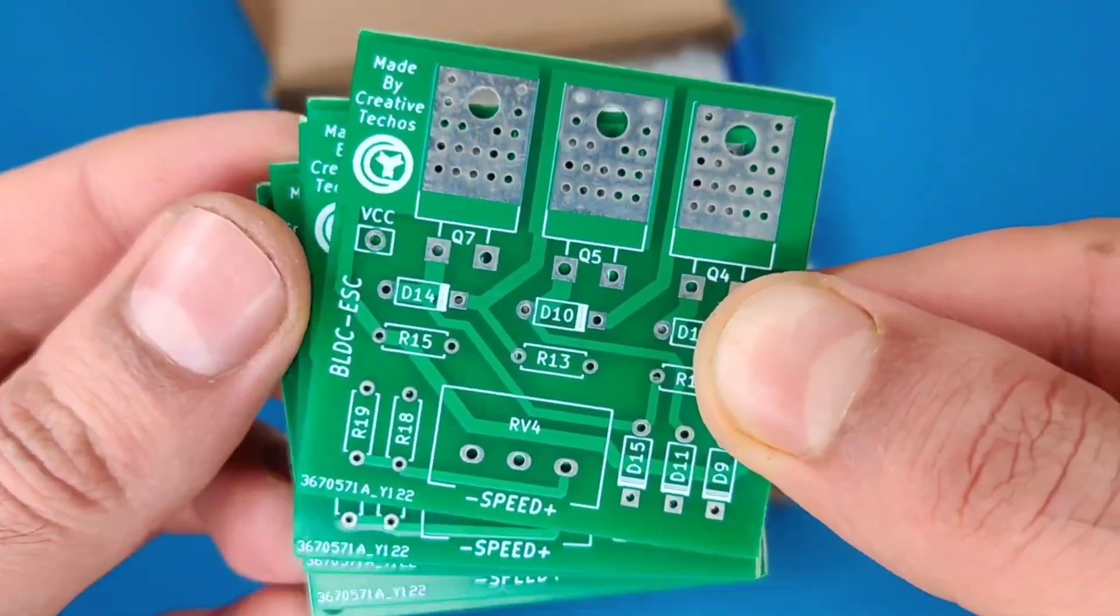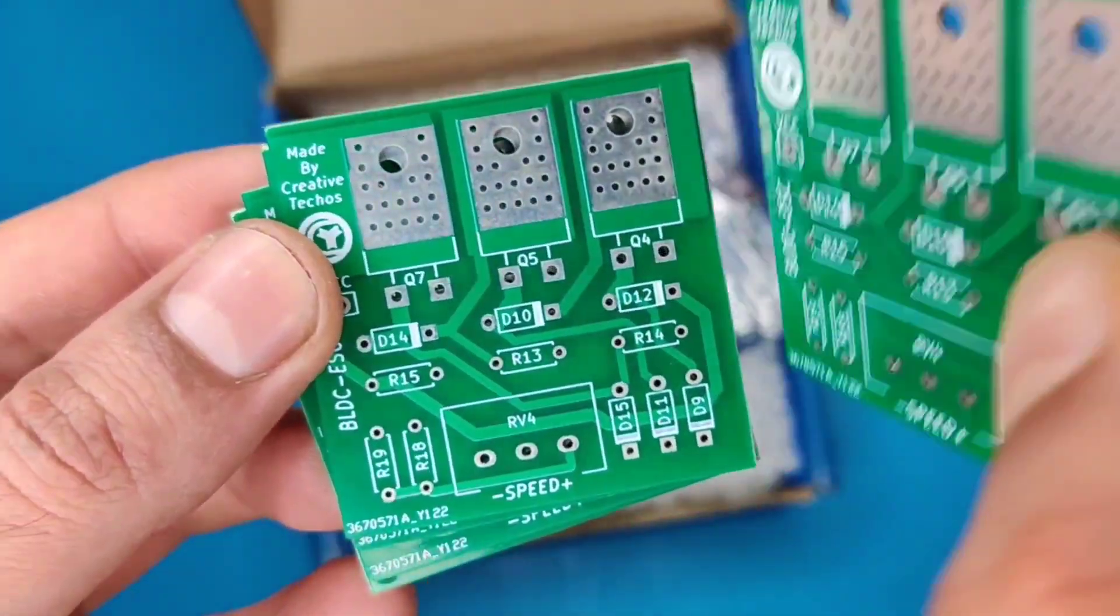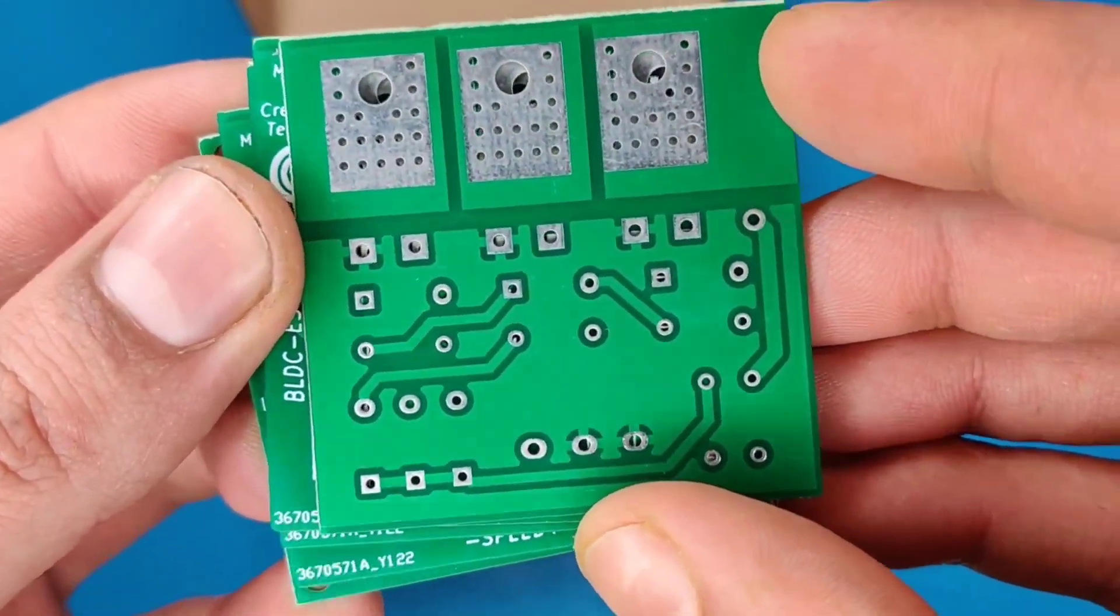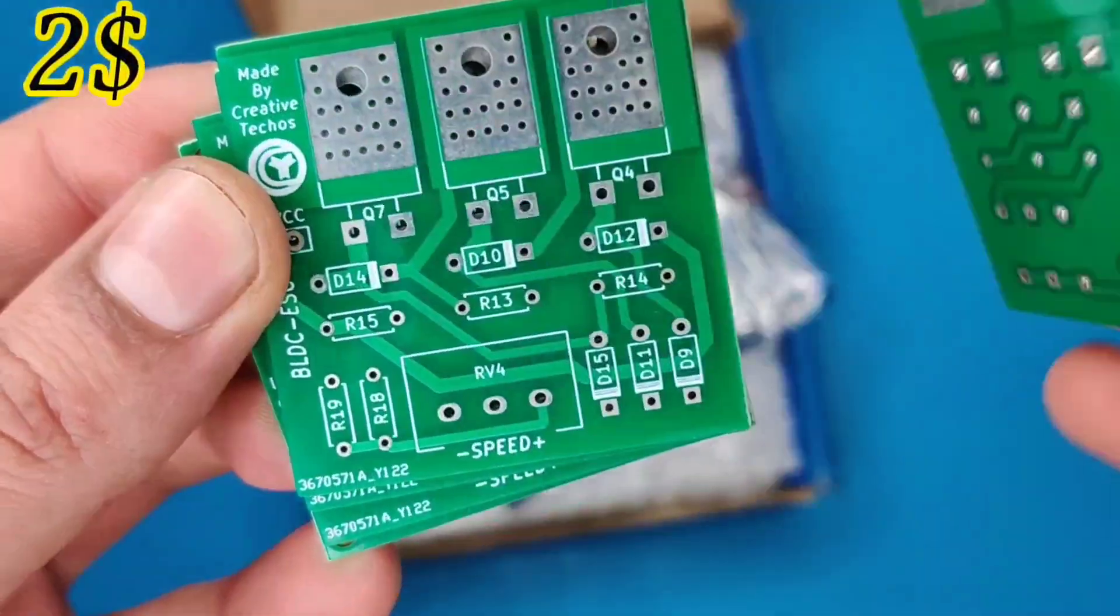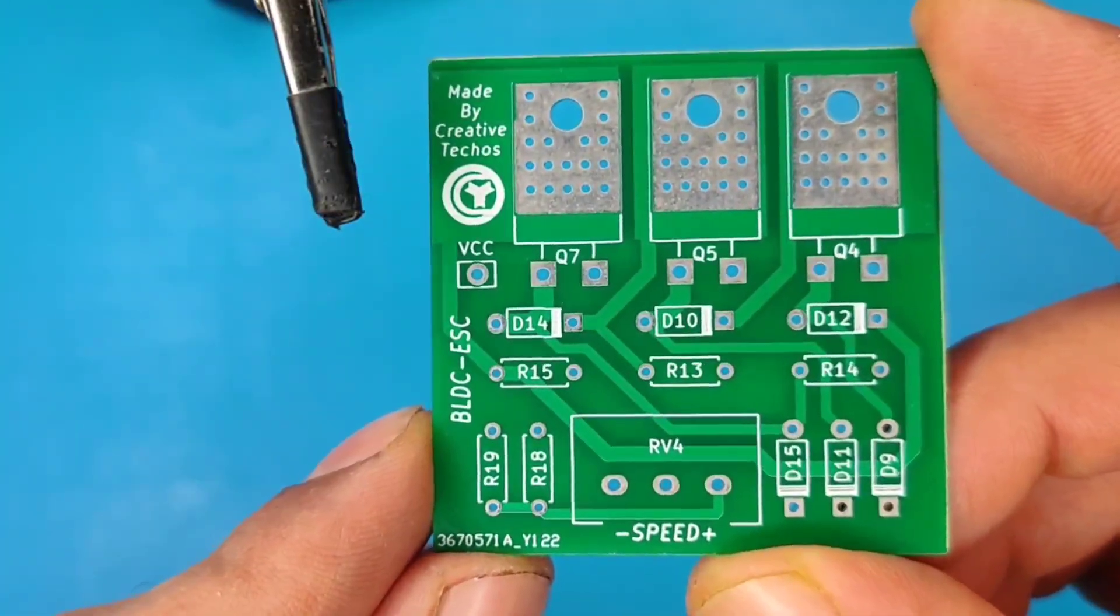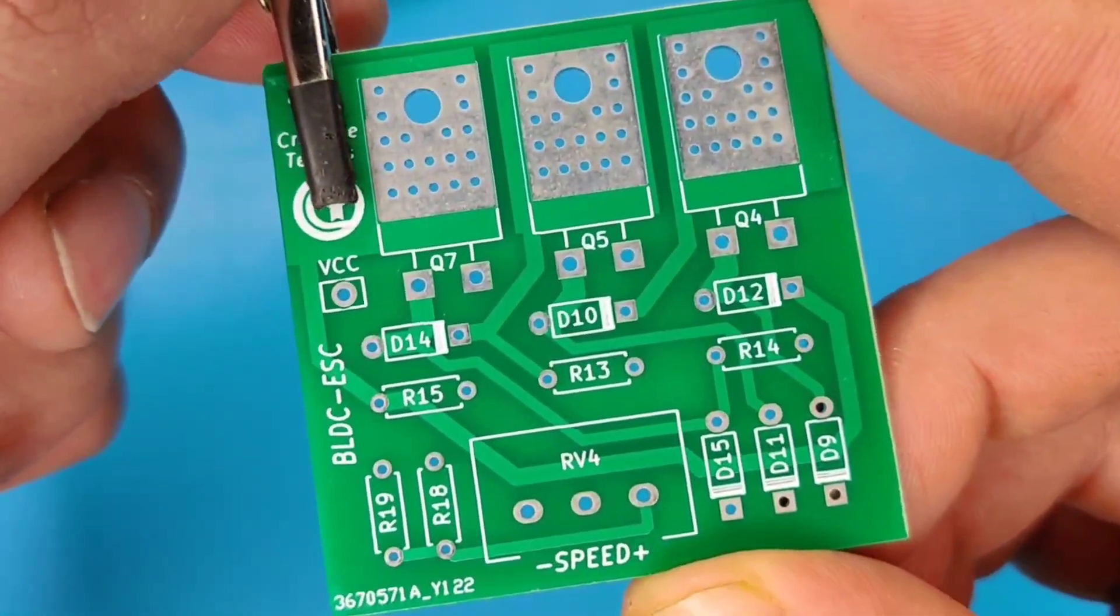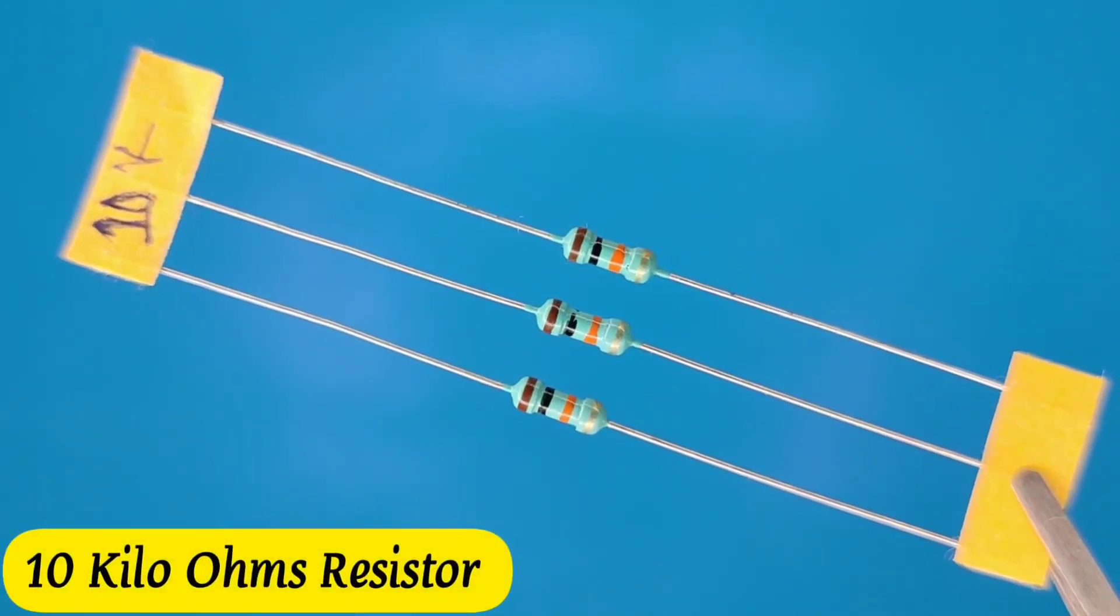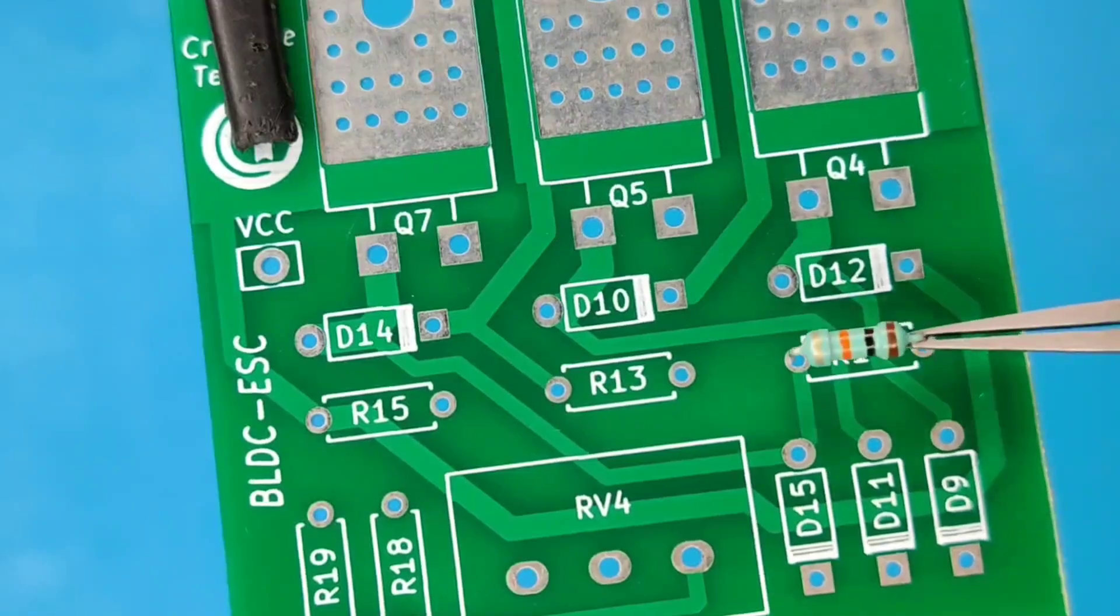Get 1-8 layer PCBs for just $2. Efficient large-scale production reduces costs and brings you PCBs at unbeatable prices. Then I prepared the PCB for its components, so let's place all the components into the PCB according to the circuit diagram.